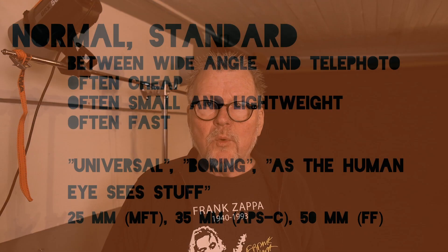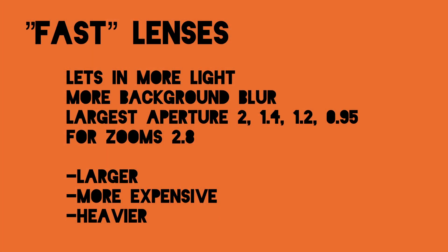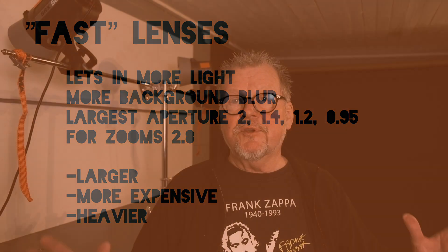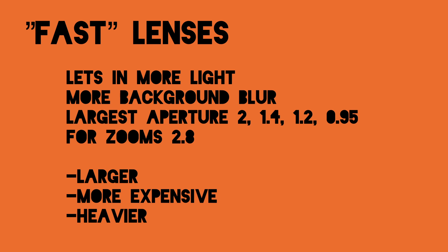What focal lengths are normal or standard? On Micro Four Thirds it's around 25 millimeters. On APS-C it's around 35 millimeters. And on full frame it's about 50 millimeters. A fast lens is a lens that lets in much light. It also gives more background blur when you use those big apertures — small aperture numbers. A fast lens has a maximum aperture of f/2, f/1.4, f/1.2, or f/0.95. Fast lenses are often larger, more expensive, and heavier, but sometimes they are very useful.